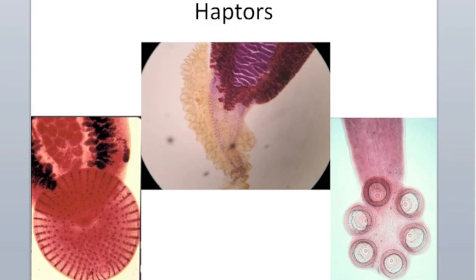Their adaptation for holding on is a structure called a haptor, located on the posterior end. Haptors come in different forms: some are mostly suckers, some have many small hooks, and some are suction clamps. Depending on what structure the monogenian needs to hold on to, the haptor is well adapted for that specific surface. Taxonomists often use haptors as a primary characteristic to distinguish between different species.